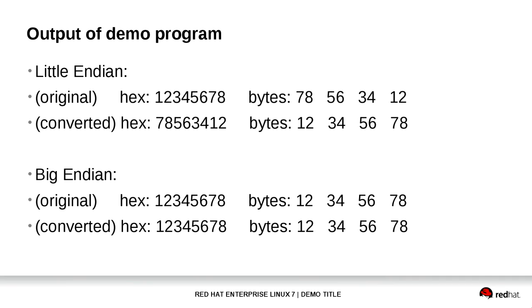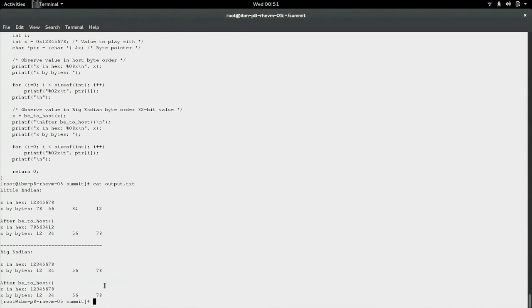Looking at the Big Endian output, reading as a large number and as smaller bytes reveals the same expected numbers. Running it through the BE-to-host routine does nothing because the host is already Big Endian, so we see the converted output stays the same.